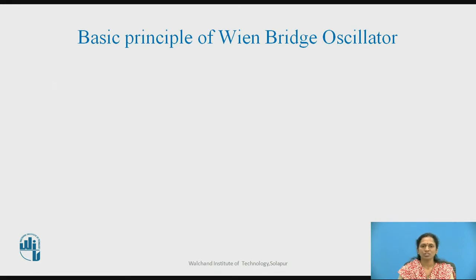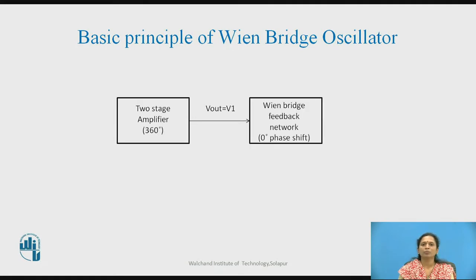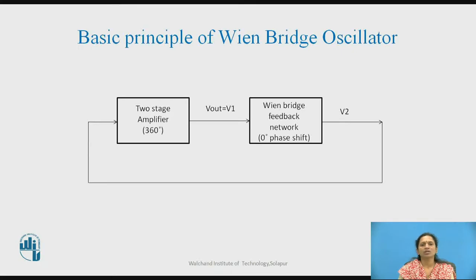The basic principle of the Wien Bridge Oscillator: as it is part of the classification of RC oscillators, it consists of a network and a two-stage amplifier which provides a 360-degree phase shift. The output of this two-stage amplifier is given to a bridge circuit consisting of an RC network — a series and parallel combination of RC components — forming a Wien Bridge circuit, which is used to stabilize the output of the oscillator. This is further given to the input of the two-stage amplifier.